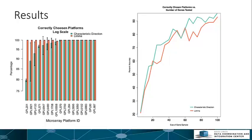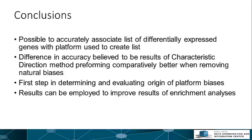Therefore, the size of the gene set tested is vital to the accuracy of the model's results. We conclude that it is possible to associate a gene set with the platform used to create that list of genes. This is the first step in determining and evaluating the origin of platform biases, and the results of this model can be employed for further research into this topic and to improve the results of enrichment analysis.